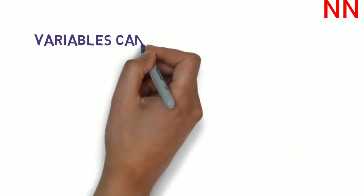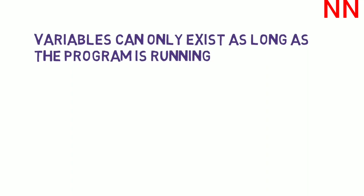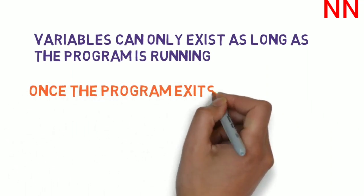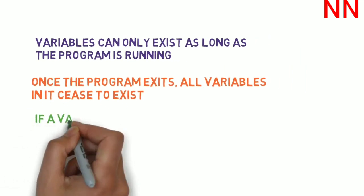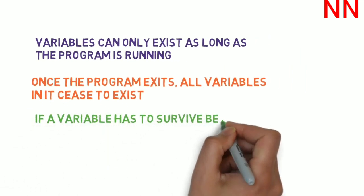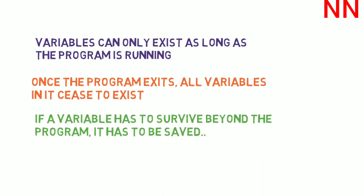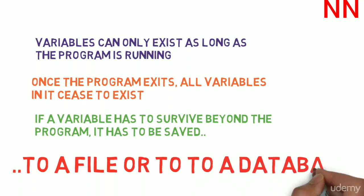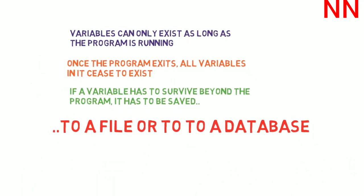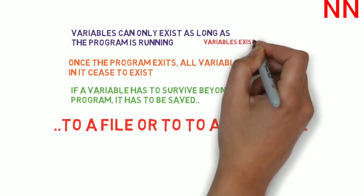The moral of the story from that particular example was that variables can only exist as long as the program is running. Once the program exits, all variables in it cease to exist. So, if a variable has to survive beyond the program, this is called persistence, it has to be saved. And you can save a variable either to a file or to a database. These are persistent storage types.